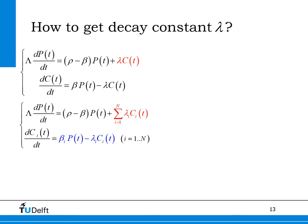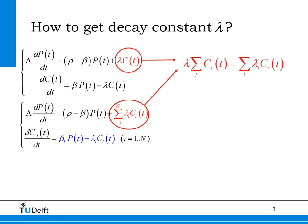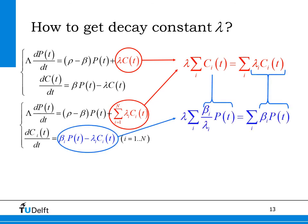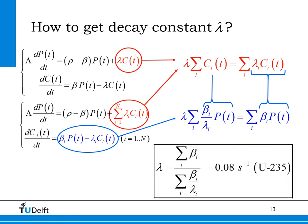From this set of point kinetics equations, we can derive the effective decay constant when we lump all precursor families into one. First, the red term in each equation for the fission neutron production rate P must be equal to each other, from which we extract the equality shown in red. Secondly, in a stationary reactor the total number of precursor atoms does not change in time, from which we derive the equation in blue. From this we get the final expression for the decay constant lambda for one lumped precursor family. Inserting values for beta and lambda for each precursor family of uranium-235, we get lambda equals 0.08 per second, meaning on average a delayed neutron is emitted 13 seconds after the fission event — that is 1 divided by lambda.